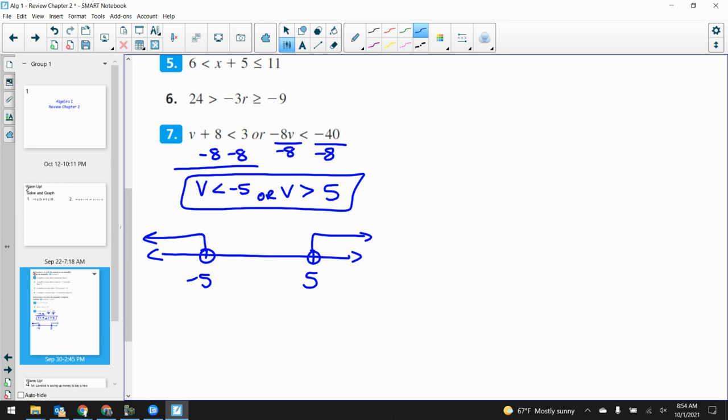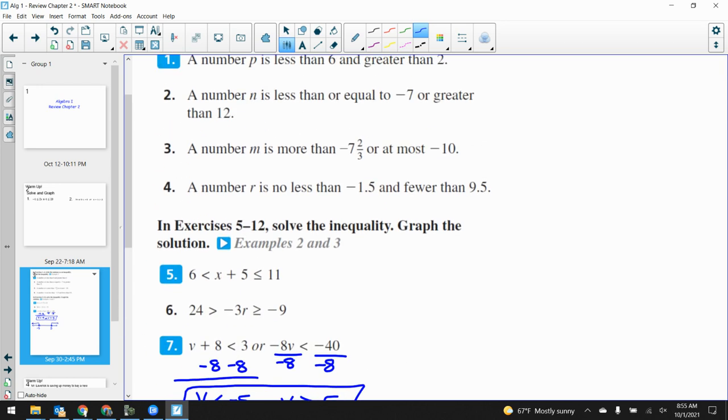Other questions? What do we have? Go ahead. Number three. Is this one of the ones where you had to write? Yeah. The at most throws a lot of people off. Okay. M is more than negative seven and two-thirds. Okay. That's not too bad. Seven and two-thirds. Sorry, I wrote that wrong. Seven and two-thirds. Or, okay, that tells me that this is an or inequality. Or at most negative ten. Okay. If it's at most negative ten, it's got to stay less than or equal to negative ten. Okay. There's my inequality.